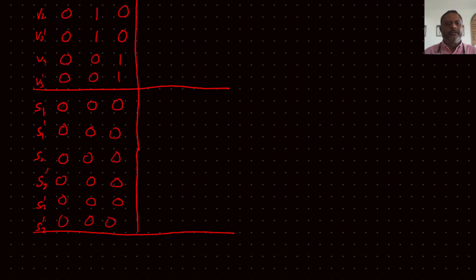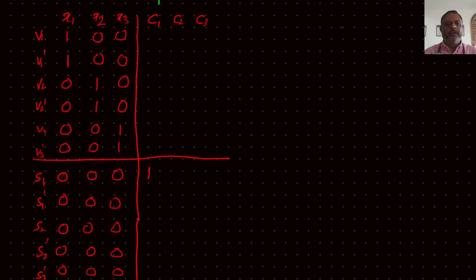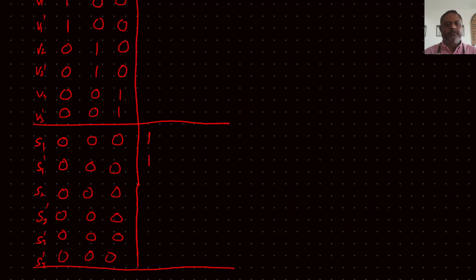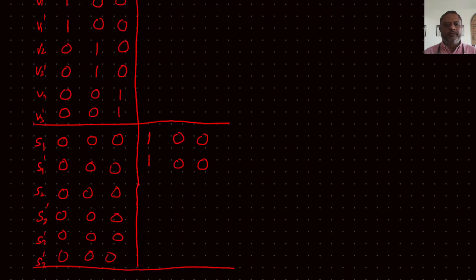For the supplement variables, S1 talks about C1 — so S1 gets a 1 under C1 and S1 dash gets a 1 under C1 as well. Similarly, S2 and S2 dash each have a 1 under C2, and S3 and S3 dash have a 1 under C3, with zeros in all other clause columns.